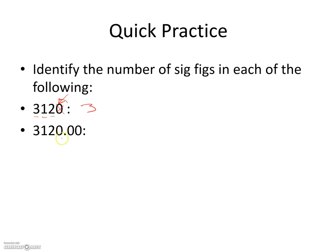Next example: a similar value but with a decimal point shown. Again, the 3, 1, and 2 are significant. Now we ask: are the trailing zeros significant? They come at the end of the number, and there is a decimal, so we count those too. That gives us six significant figures total.